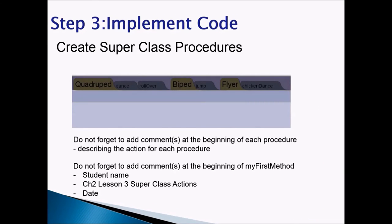Step 3: Implement code. Create superclass procedures — quadruped procedures, biped procedures, and flyer procedures. Do not forget to add comments at the beginning of each procedure describing the action. Do not forget to add comments at the beginning of my first method. Your comments should include student name, lesson number, lesson name, and date.